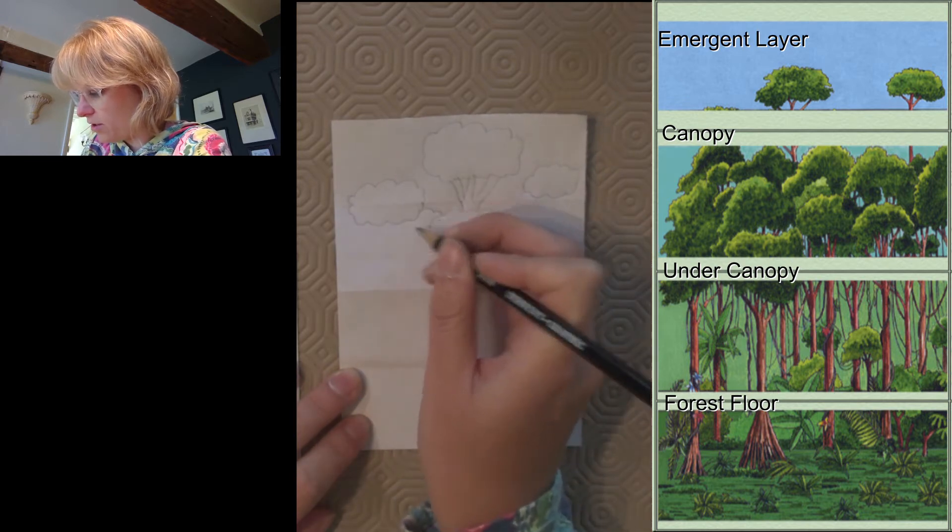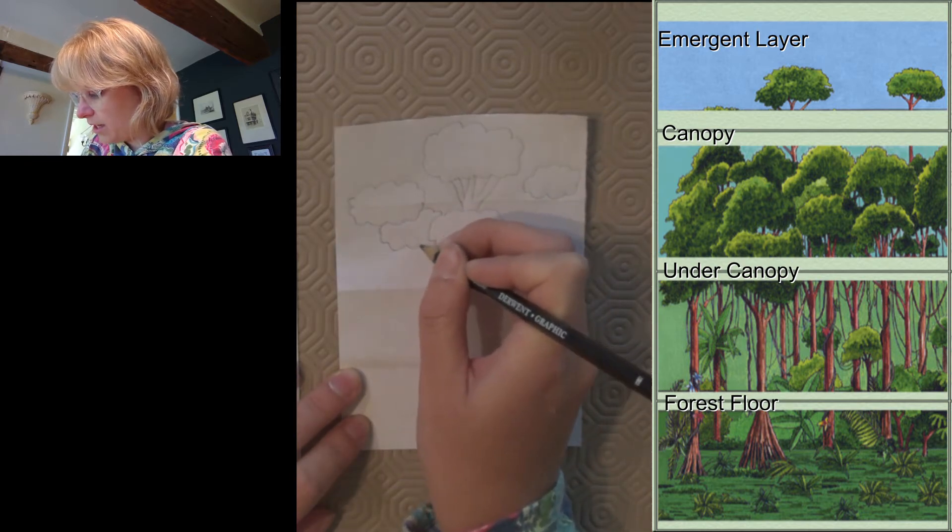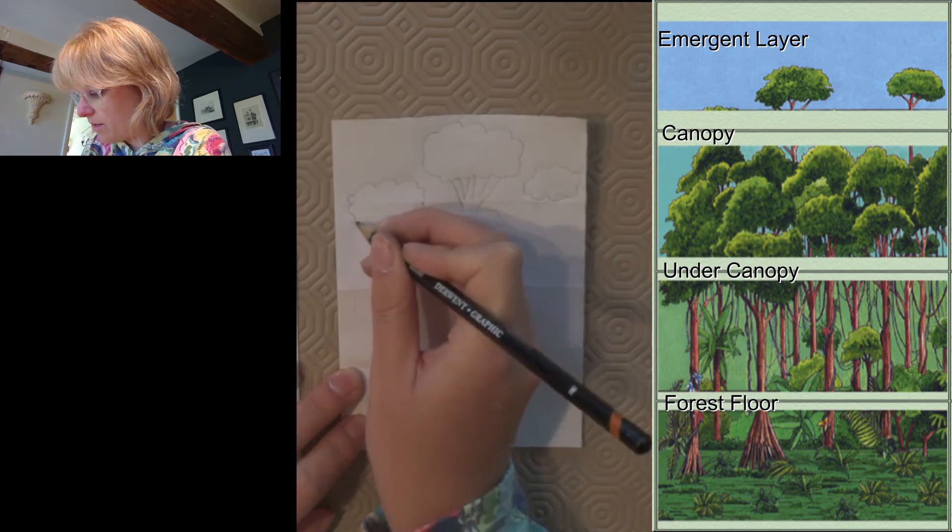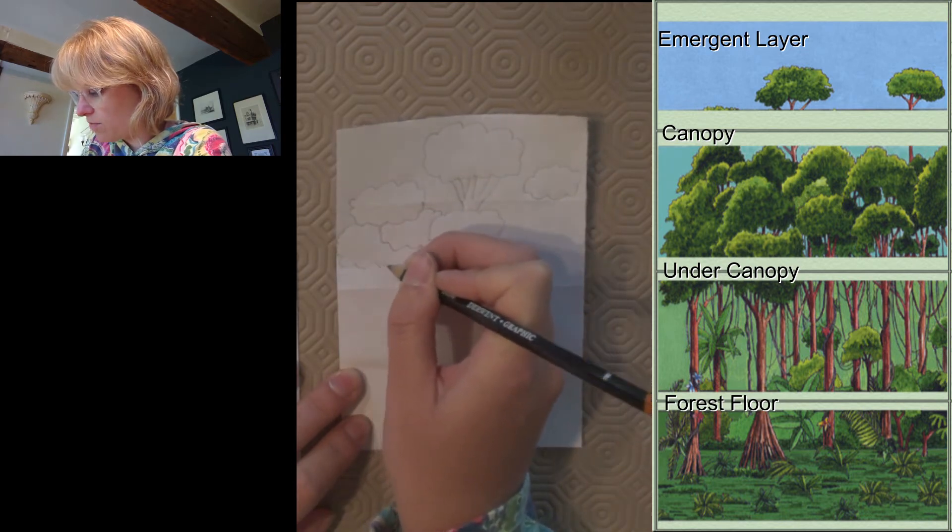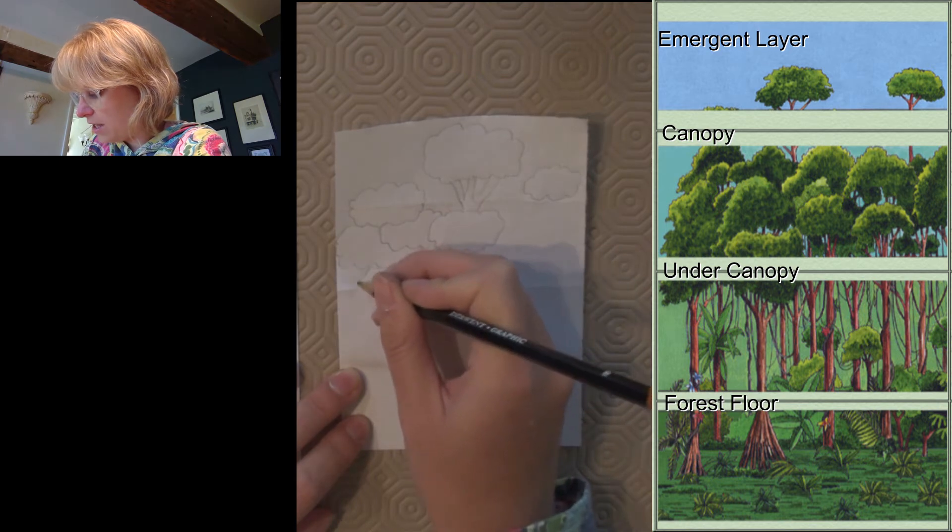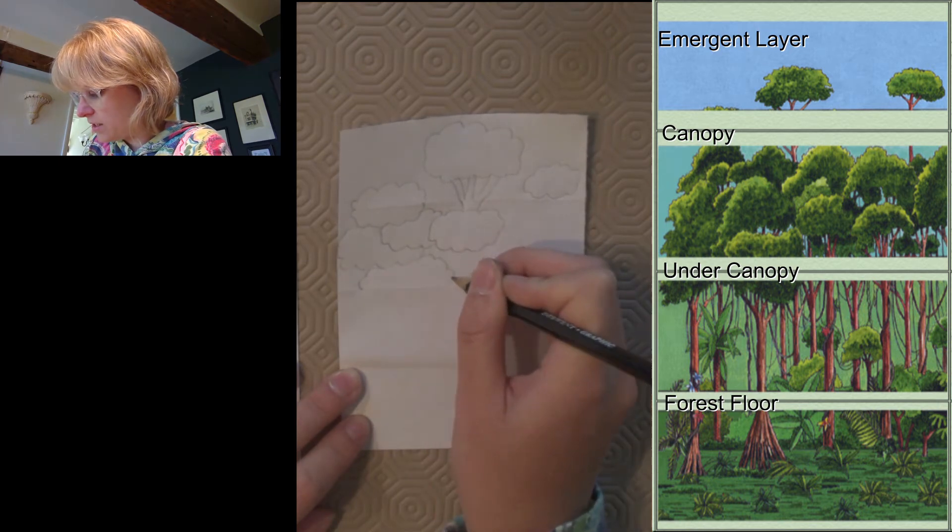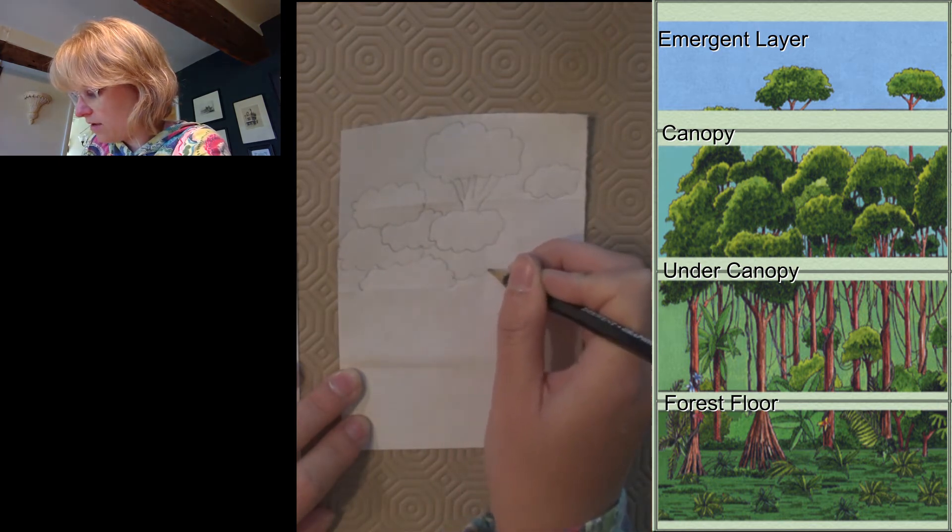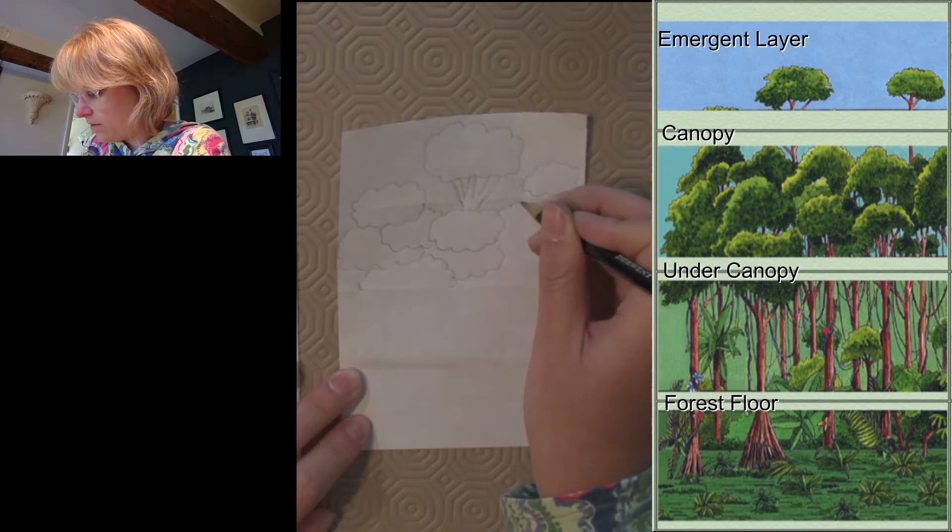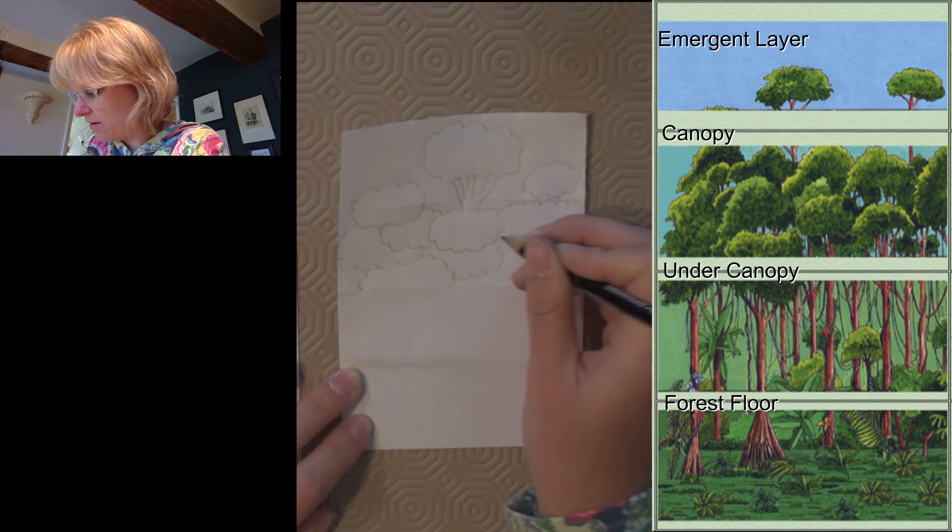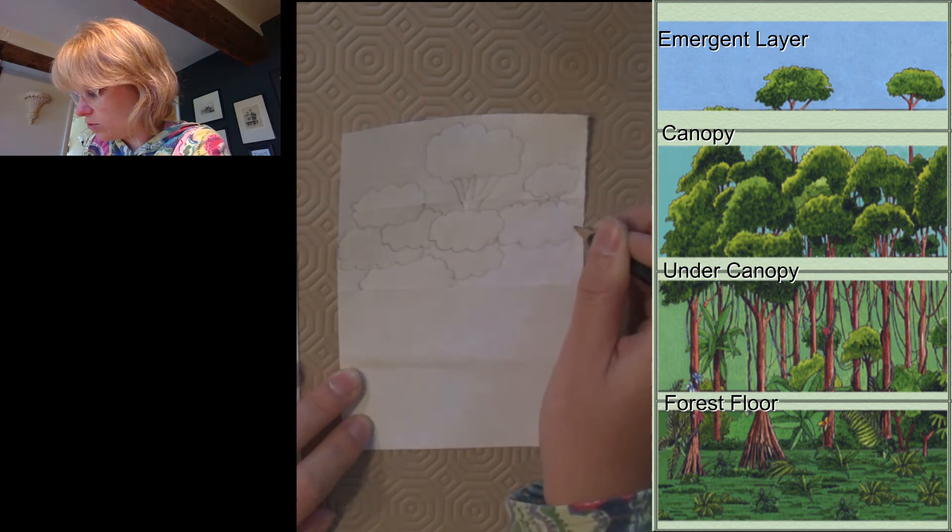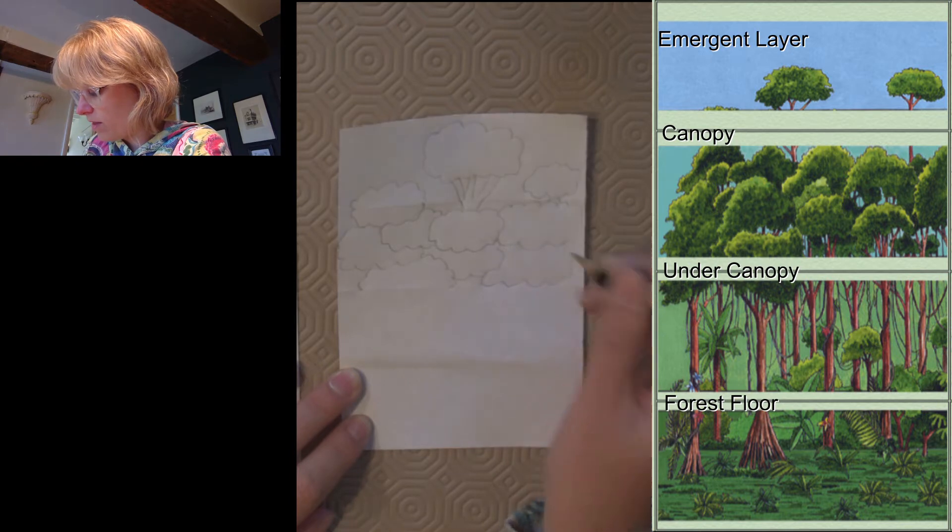I might put another tree in between there, maybe another tree there, so it should be completely green. You can't see any trunks because there's other trees in the way. Another big tree, maybe you can see a tiny bit of a trunk there, but then it's covered by this tree.